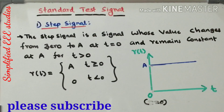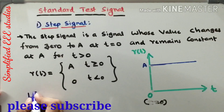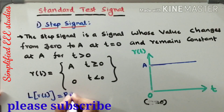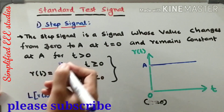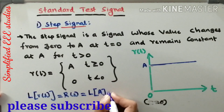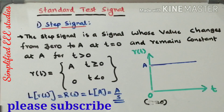If you want, you can convert the step signal into the S-domain. It is currently available in the time domain. By taking the Laplace transform, L of r(t) is nothing but R(s), which is equal to the Laplace transform of A, that is A divided by s.